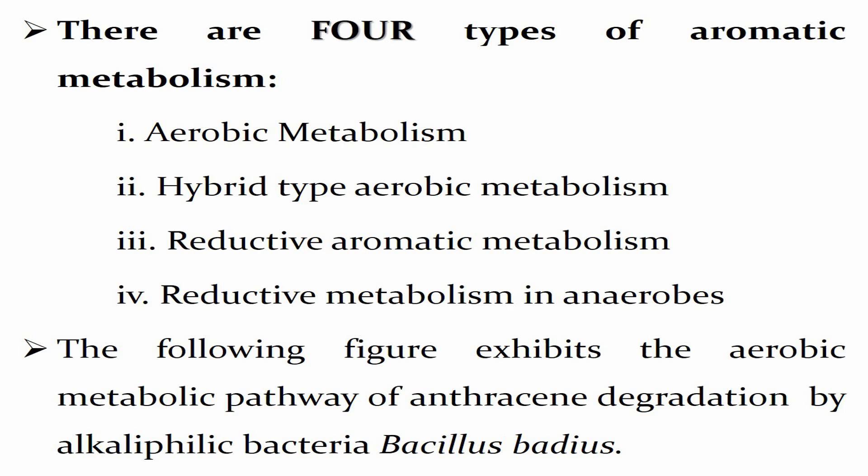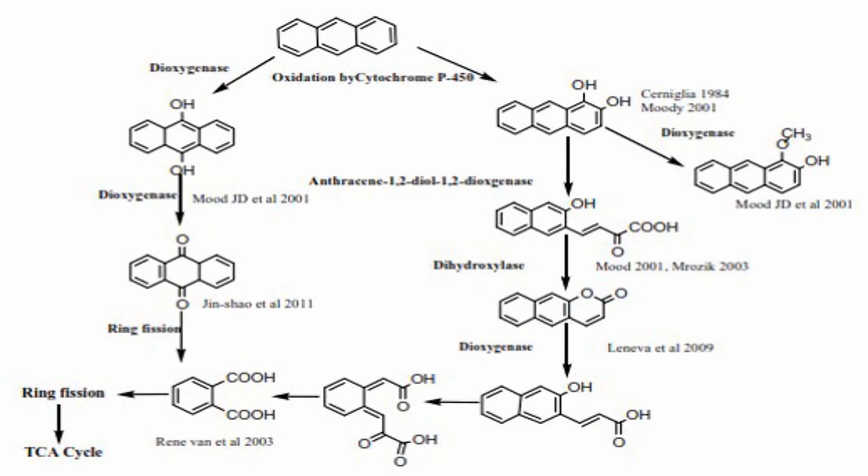The figure shows the aerobic metabolic pathway of anthracene degradation by the alkaliphilic bacterium Bacillus badius. Anthracene at the top has three rings and can follow two different pathways depending on the microbial enzymes present. During the pathway, some rings open up and eventually feed into the TCA cycle to form inorganic compounds. The bioremediation pathway depends on which enzymes the microorganism possesses.